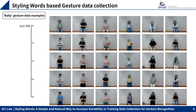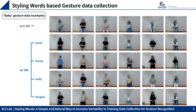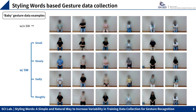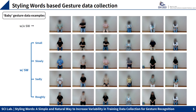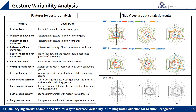This slide shows the gesture videos without styling words. When the styling words are applied to gesture collection, it is easy to find that the gestures are changed. In order to quantitatively measure the change in variability, we extracted human skeletons using the OpenPose model, and with the extracted skeleton we analyzed it with specific measures.